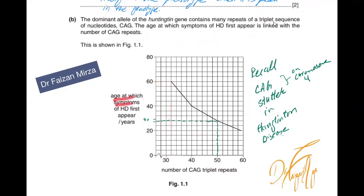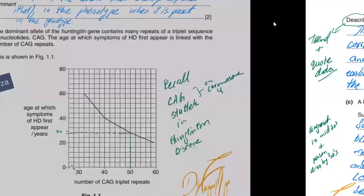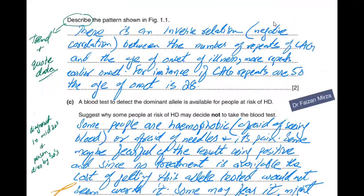The age at which symptoms first appear is measured in years. For example, if there are 50 repeats of CAG on chromosome 4, then the individual will show the disease somewhere in the late twenties — around 28 or so. We know this from the data given to us.